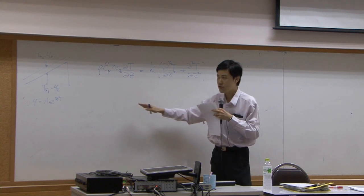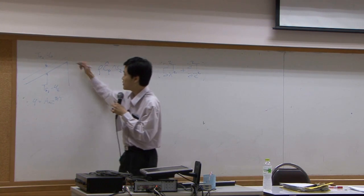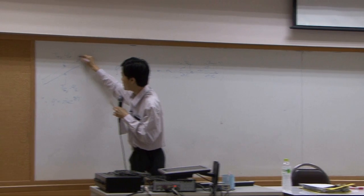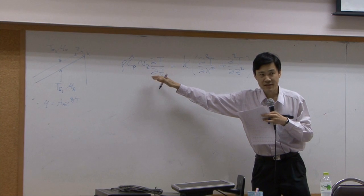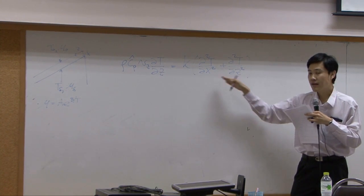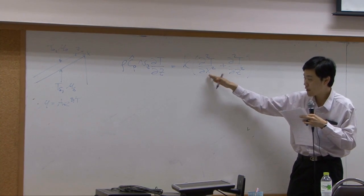So we only have three terms: convection term in Z direction, and Z direction is going this is Z, this is X. We have convection in Z direction and then we have conduction in two terms, in X direction and Z direction.